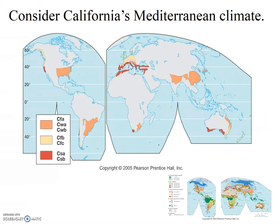Remember, it's not only the ITCZ that fluctuates. Notably, the fluctuation of the subtropical high and the westerlies has huge consequences for us in California. We'll study global climate in much more detail in a few weeks, but I'll introduce a few terms here now.